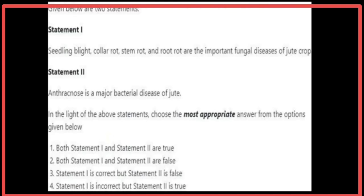Given below are two statements. Statement 1: Seedling blight, collar rot, stem rot, and root rot are the important fungal diseases of jute crop — Statement 1 is correct. Statement 2: Anthracnose is a major bacterial disease of jute — Statement 2 is false. The most appropriate answer is Statement 1 is correct and Statement 2 is false.